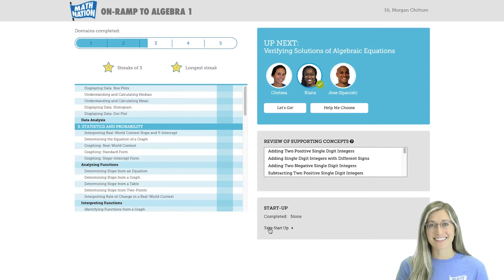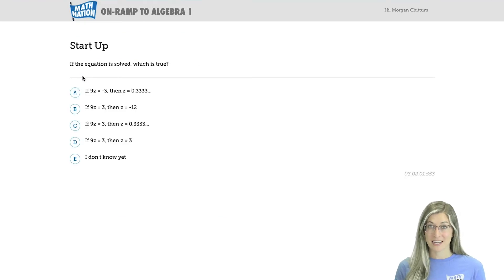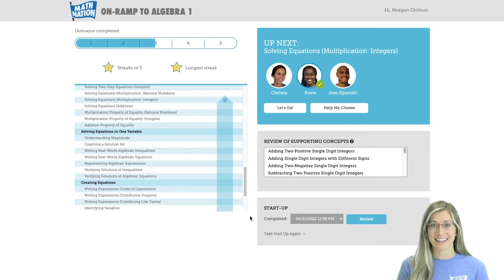Let's check it out. First, the on-ramp tool will give students a diagnostic start-up assessment. This usually takes about 20 to 40 minutes depending on the student, but we encourage students to work without a calculator and try their best. Students always have the option to select I don't know yet, rather than just making a guess.